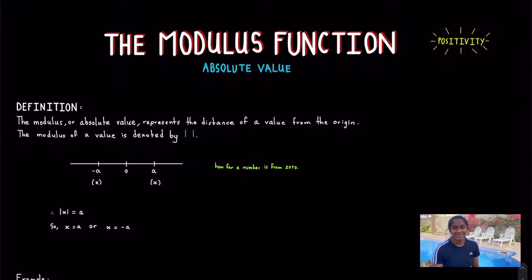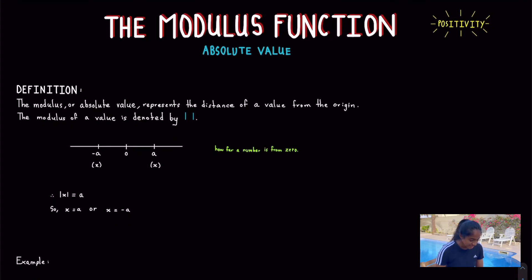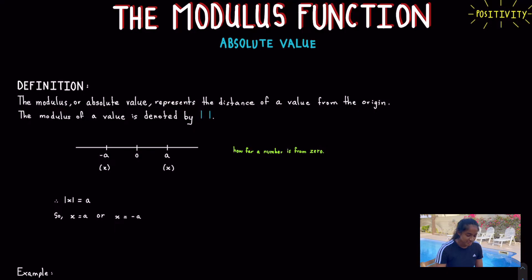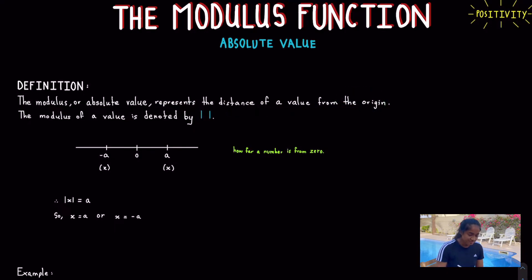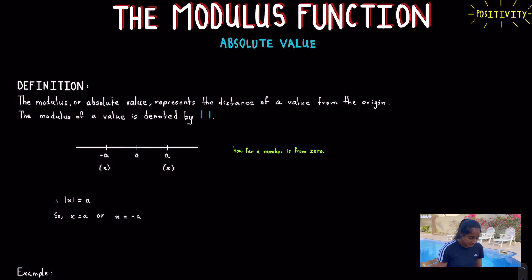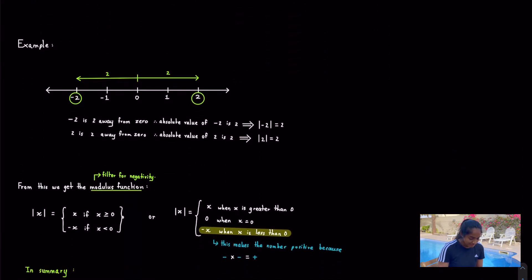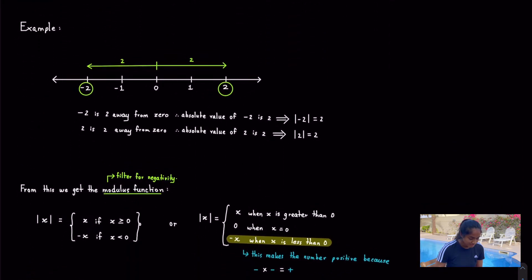The modulus function, or absolute value, is all about positivity. The definition is: the modulus or absolute value represents the distance of a value from the origin. The modulus of a value is denoted by two lines, also known as two bars. Let's look at an example to understand this concept.